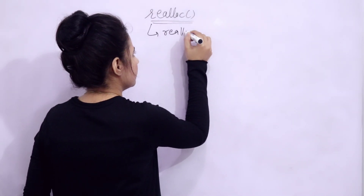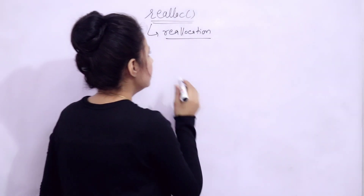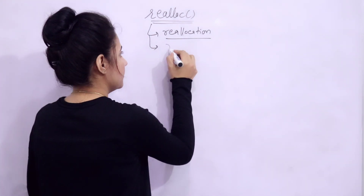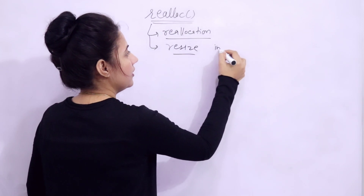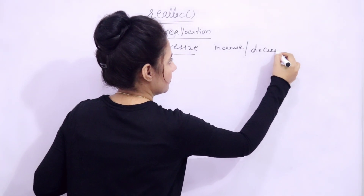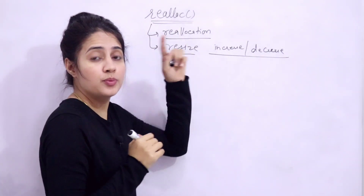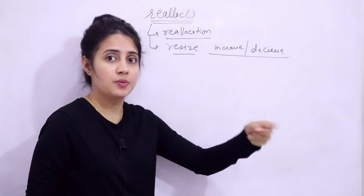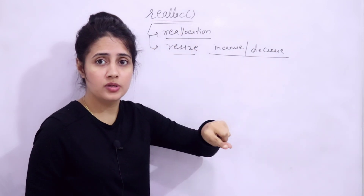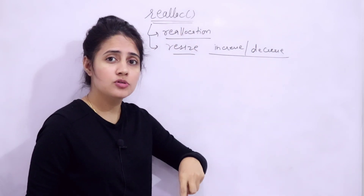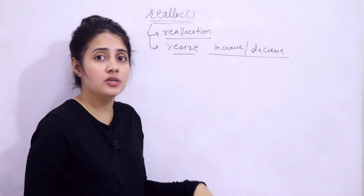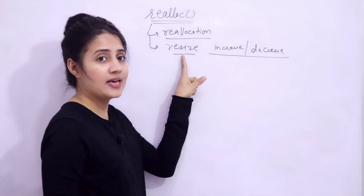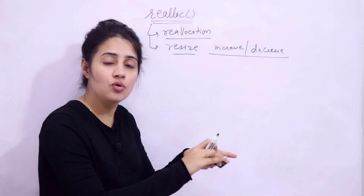Realloc means reallocation of memory. Previously you have dynamically allocated memory, but now you want to resize that memory — either increase the size or decrease the size. If you have allocated memory dynamically using malloc or calloc, then only you can use realloc to reallocate the memory. If you haven't allocated memory dynamically and you use realloc, it will show undefined behavior. It is responsible to resize the previously allocated memory using calloc or malloc.